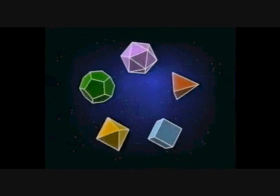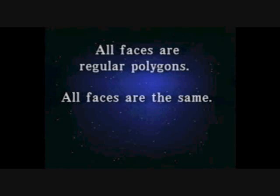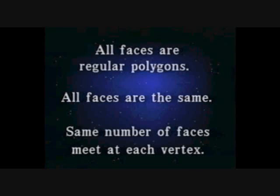The Platonic solids are characterized by three properties. All faces are regular polygons. All faces are exactly the same, or congruent. And all corners are exactly the same — that is, the same number of faces meet at each vertex in exactly the same way.